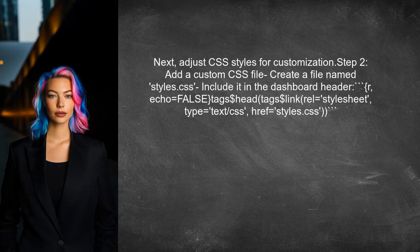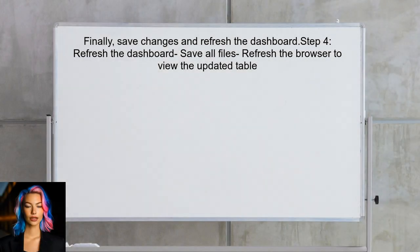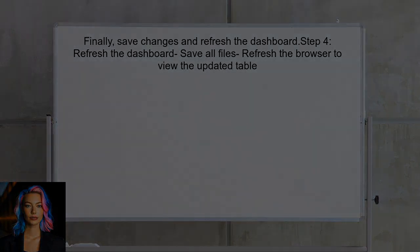You can also adjust the CSS styles to further customize the table's appearance. This can be done by adding a custom CSS file to the dashboard. In the custom CSS file, you can define specific styles for the table — for example, setting a minimum width for the table columns. Finally, save the changes and refresh the dashboard to see the updated table width and styles in action.